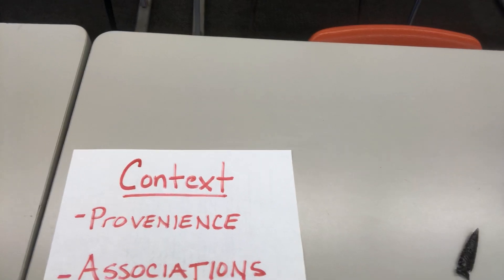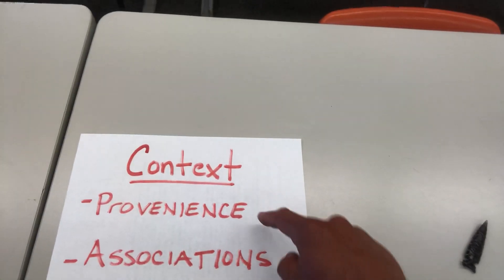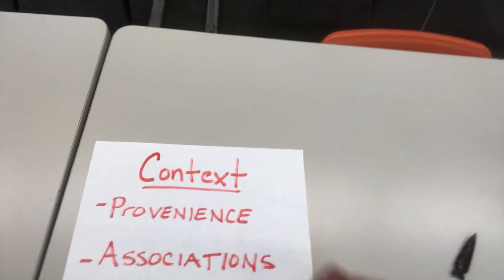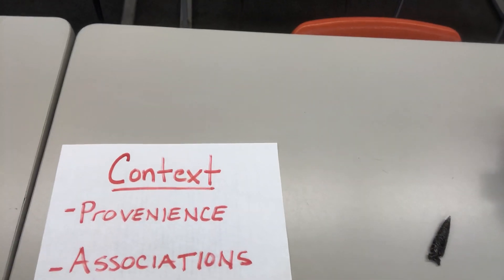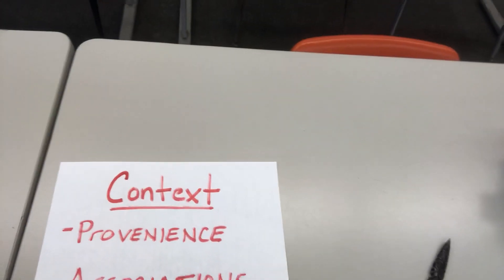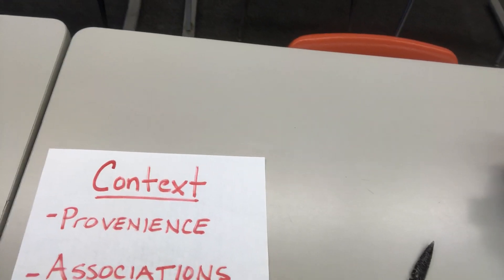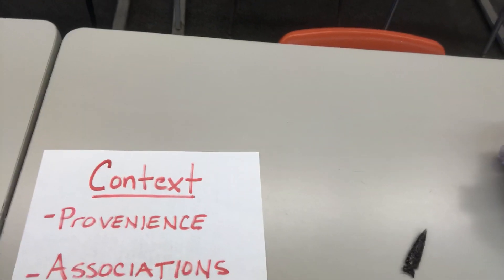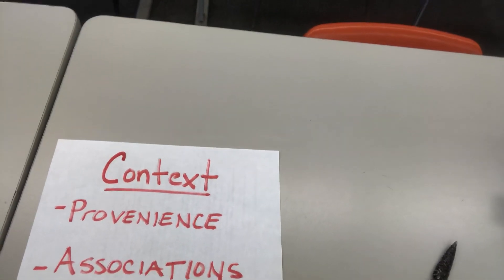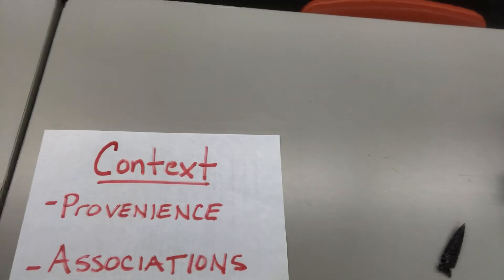The next thing I want to touch on is the idea of context. Context is a broad concept, so today I just want to focus on provenience and associations. Provenience refers to where archaeological materials were found. It can be very broad — a geographical area, an archaeological site — and it can be a horizontal or vertical axis of where materials were found. Context and provenience is critical to help us formulate interpretations within archaeology.